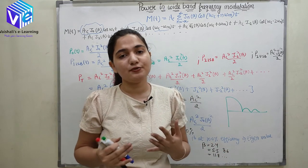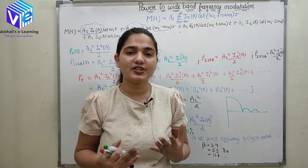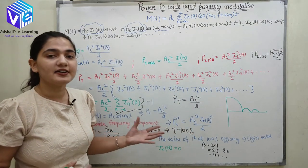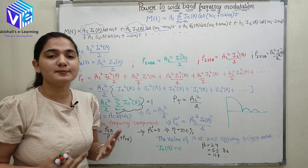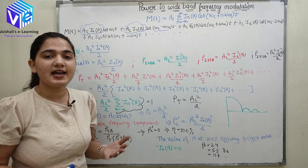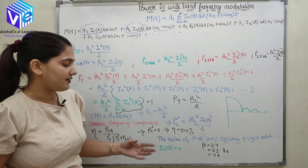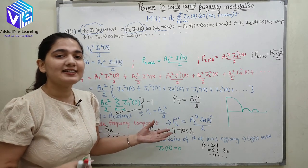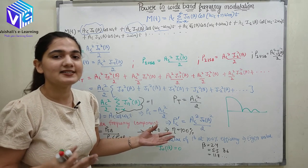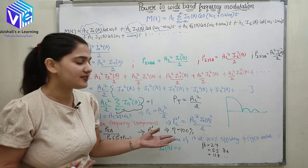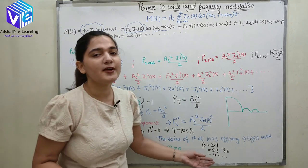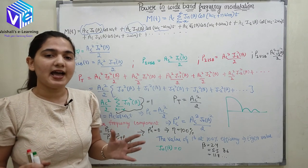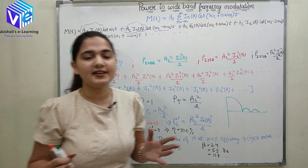From here we deduce that the standard modulation index for best efficiency — 100% efficiency, which was also achieved for DSB-SC, SSB-SC, and VSB — requires choosing the modulation index equal to 2.4, 5.5, or 11.8. Only then will we achieve 100% efficiency in FM.